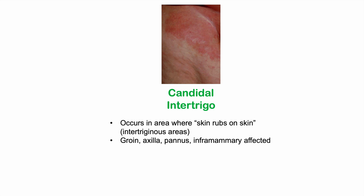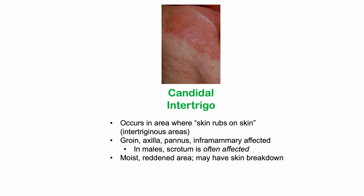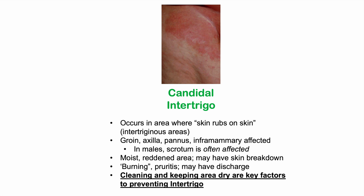In males, candida intertrigo can affect the scrotum, whereas with tinea cruris the scrotum is not affected — that's a key distinguishing feature. The appearance also differs: candida intertrigo looks moist with skin breakdown and sometimes discharge, whereas tinea cruris is often more dry. The patient with intertrigo describes burning as well as possible itching. Keeping the area clean and dry is key to preventing candida intertrigo.